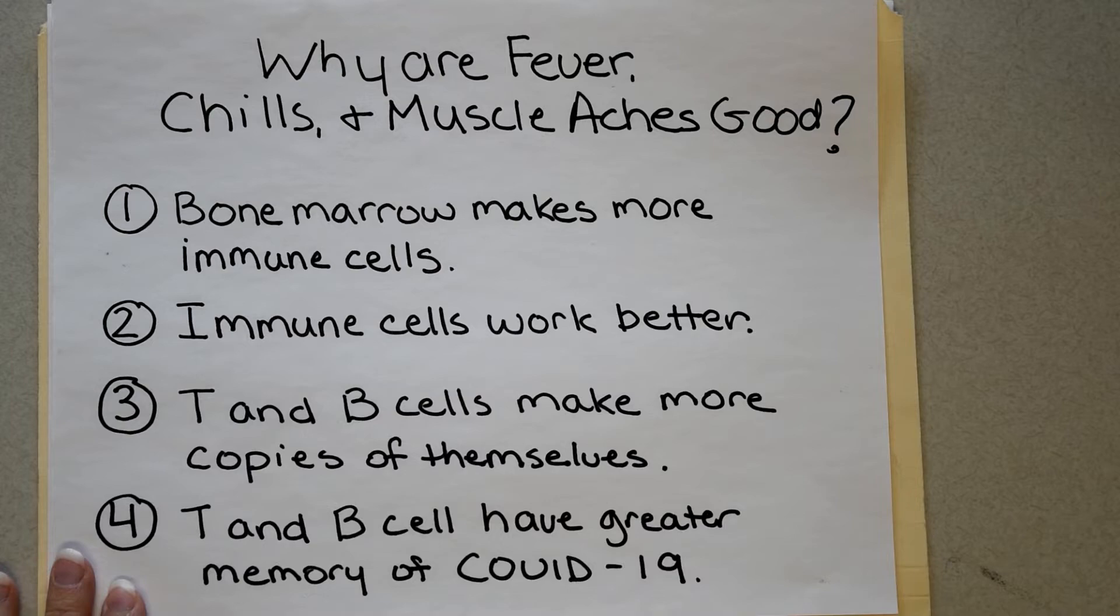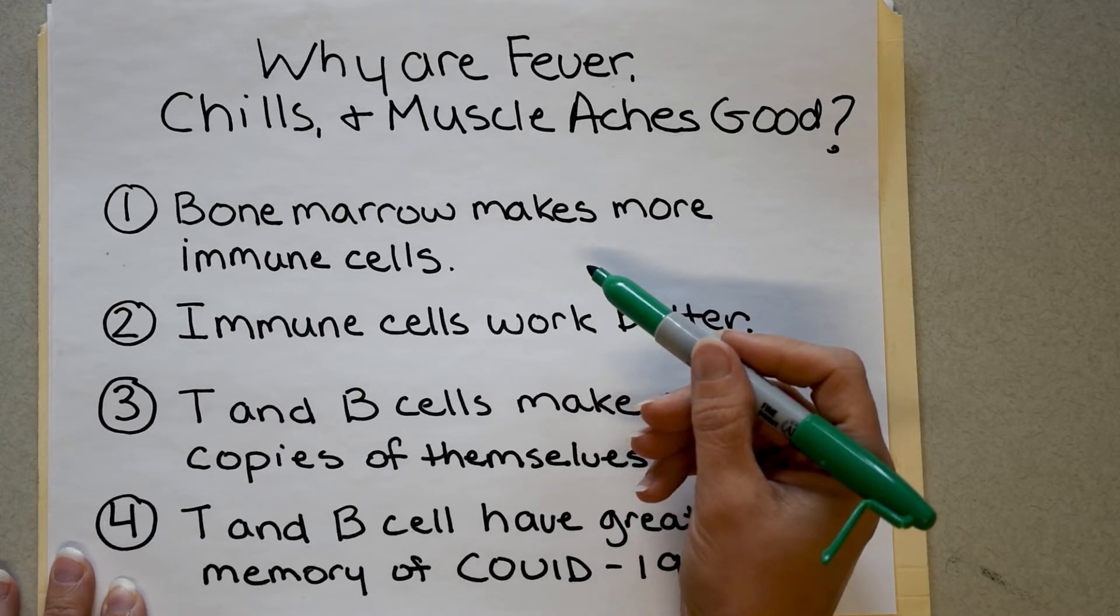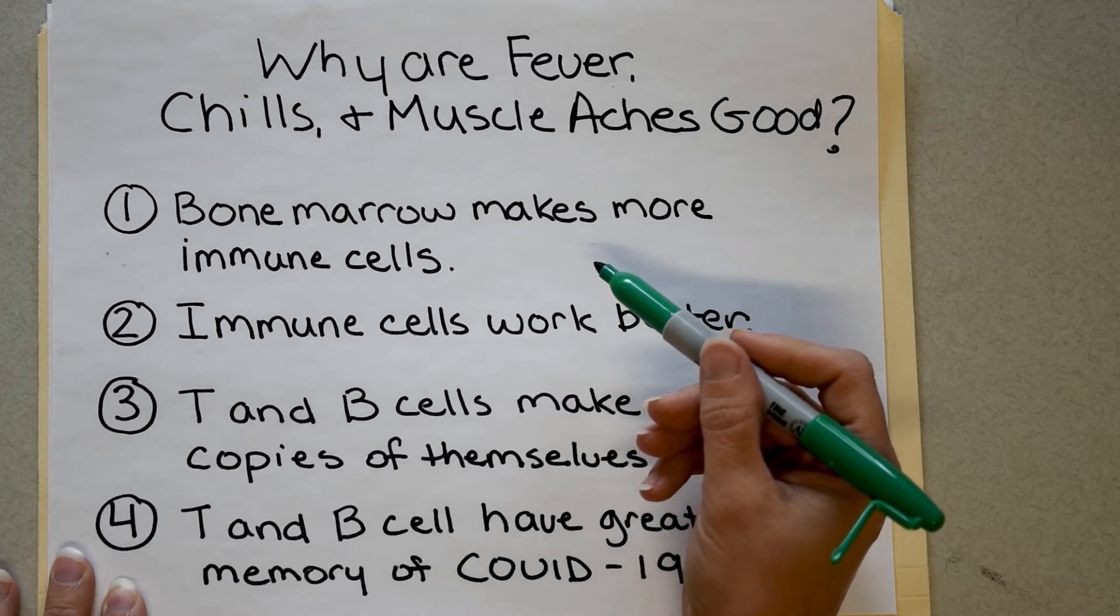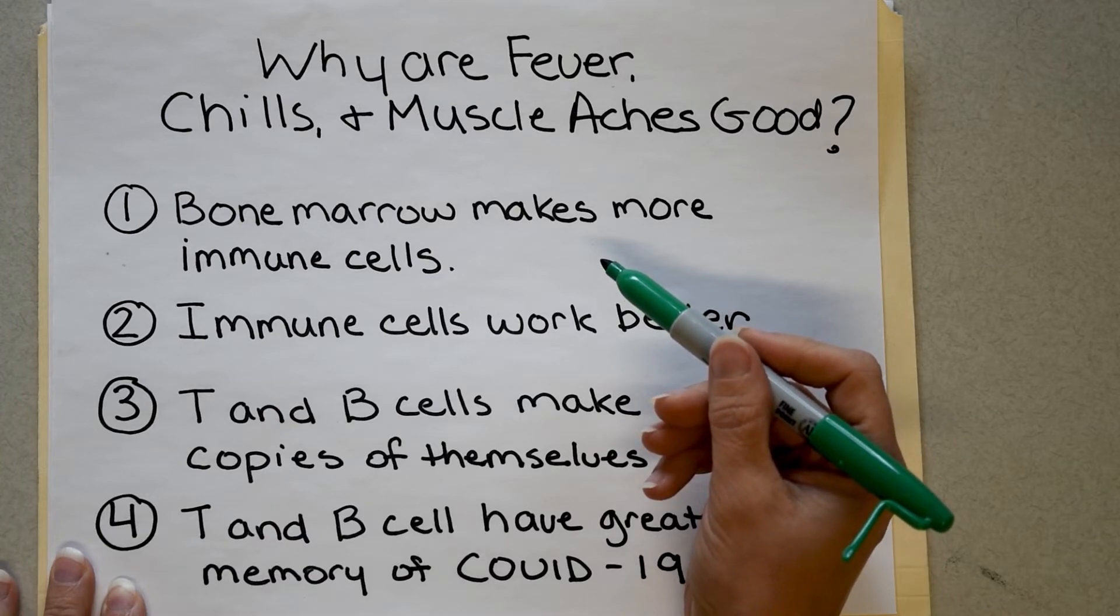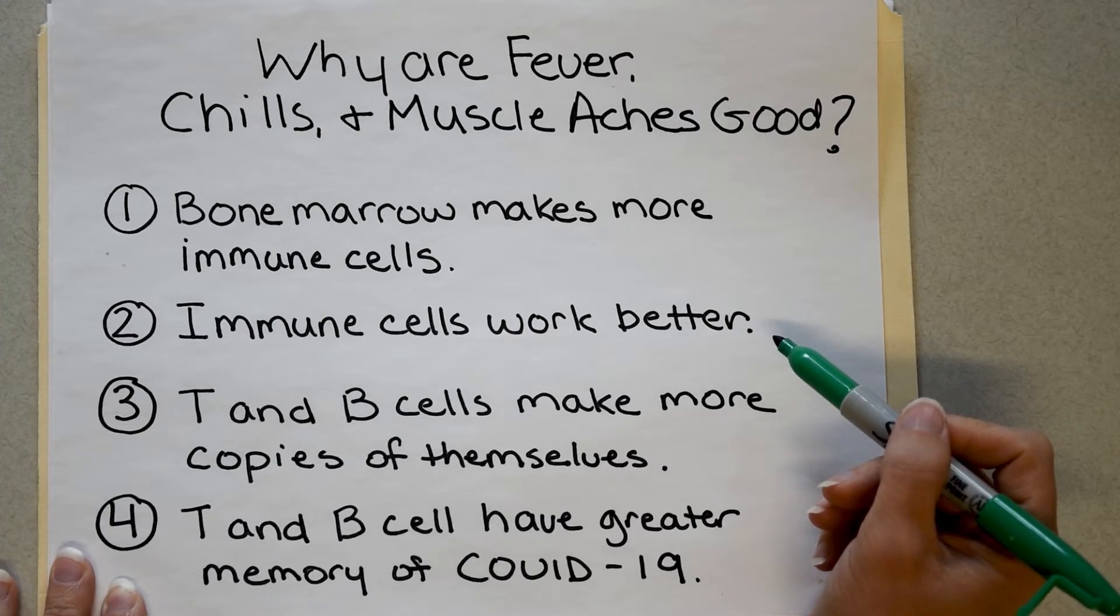Okay. So after your hypothalamus sensed those cytokines and hormone-like molecules and it started to raise your body temperature, you're going to feel those chills and muscle aches because the neurons in your brain are telling your muscles what to do and they're telling them to shake. But this is a good thing because when this happens, your bone marrows start to crank out so many more immune cells for you. So you have a lot more soldiers on your side for the battle against COVID-19. Your immune cells work better. They're able to destroy things like viruses, which can get inside of them.